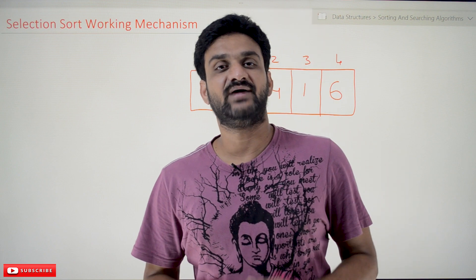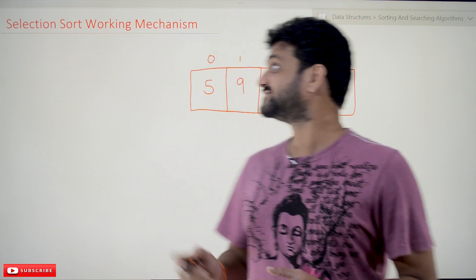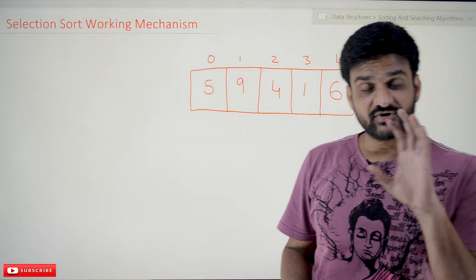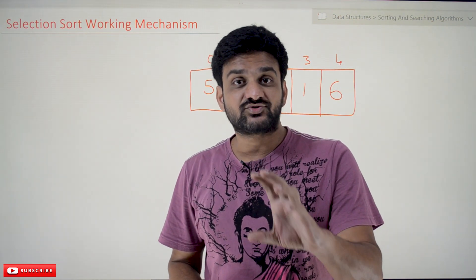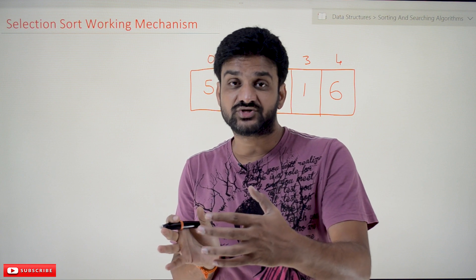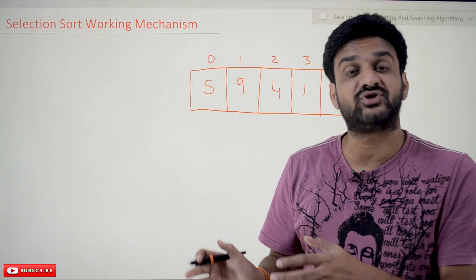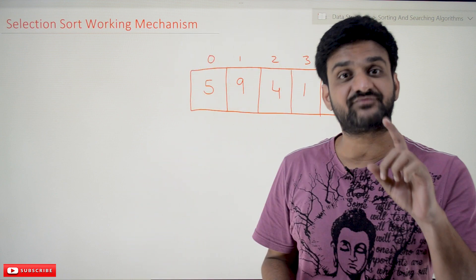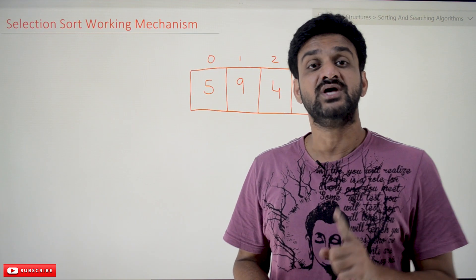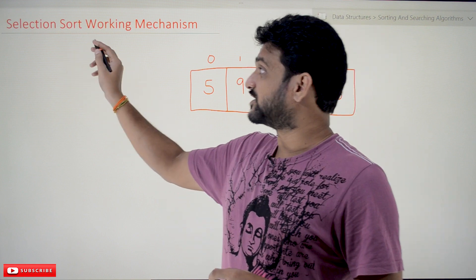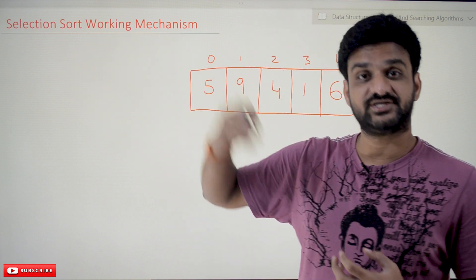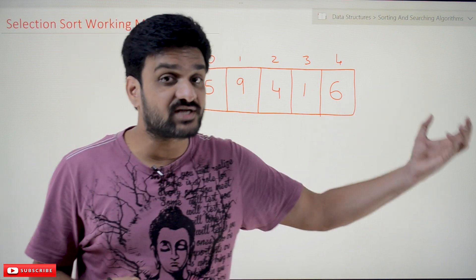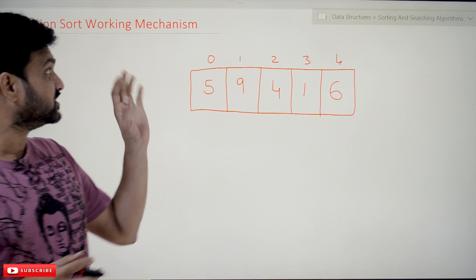Hi, welcome to Learning Monkey. I am Vikram. In this class we'll try to understand the selection sort working mechanism. This is our first video of our course called Data Structures. In this course, the first section is going to deal with different types of sorting and searching algorithms. We are going to start with our first sorting algorithm, which is selection sort, and after that we will try to understand the algorithm for selection sort.